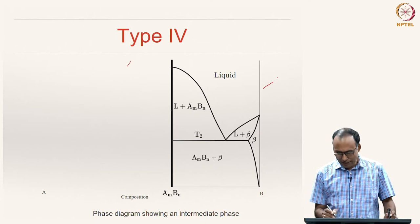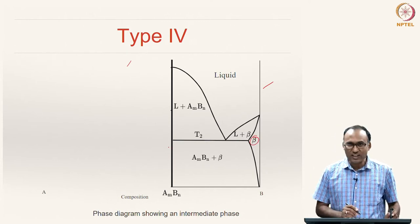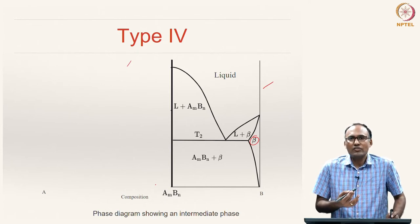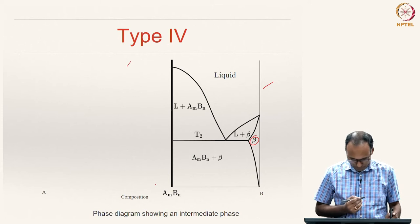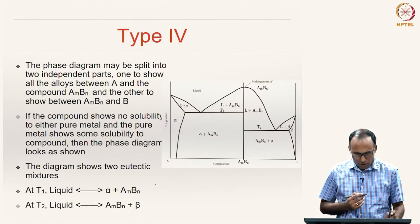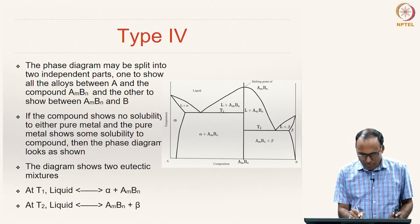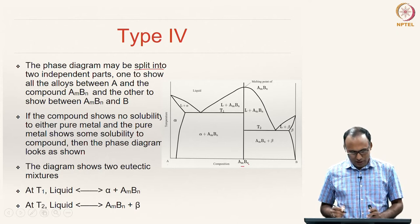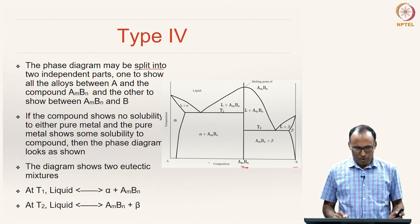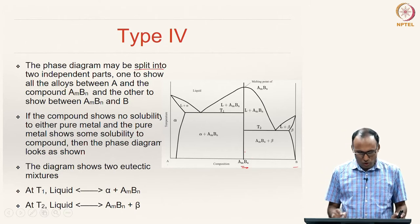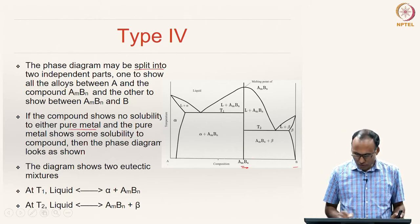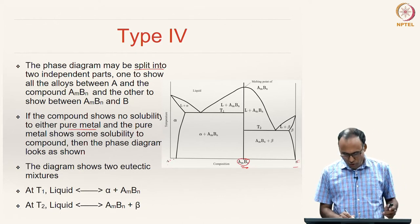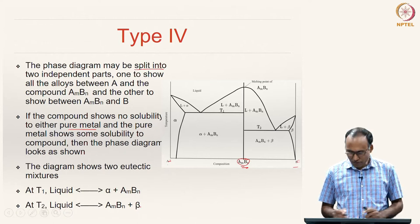If you blank the left-hand side, you have one terminal solid solution beta, and on the left-hand side you have pure solid A_M B_N. It is a compound, but it can be thought of as a pure solid because it is congruently melting. The phase diagram can be split into two independent parts: one to show all alloys between A and A_M B_N, and another to show all alloys between A_M B_N and B. If the compound A_M B_N has no solubility in either pure metal, the phase diagram looks like a simple eutectic on each side.